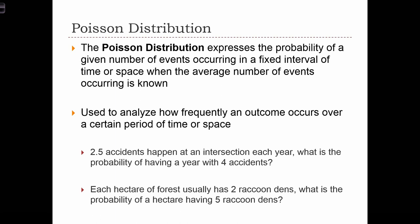The Poisson distribution is another probability distribution that we can use for discrete processes. It expresses the probability of a given number of events occurring in a fixed interval of time or space when the average number of events occurring is known.